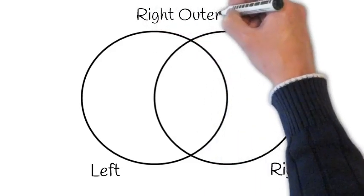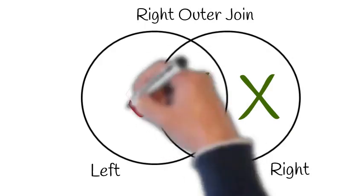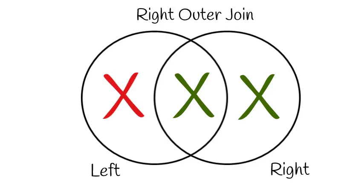So last but not least, let's look at a right outer join. Now a right outer join is going to include all records in the right table and data from the left table that matches the join condition. But any records in the left table that do not match the join condition do not appear in the query results.